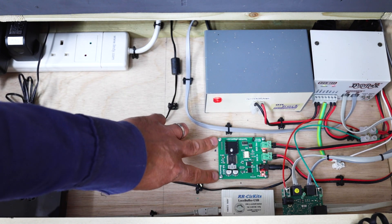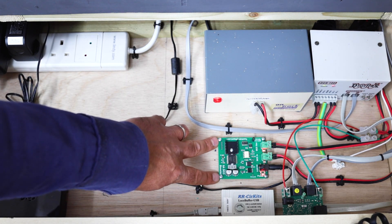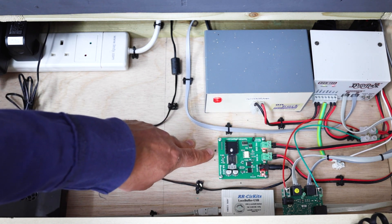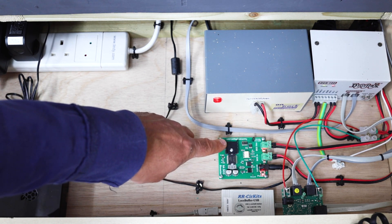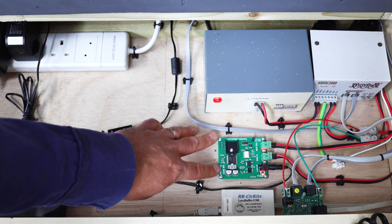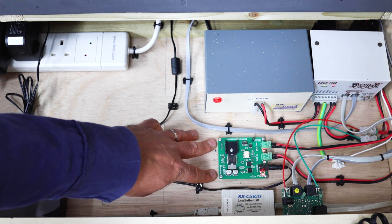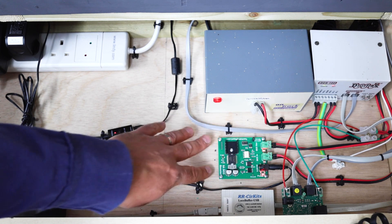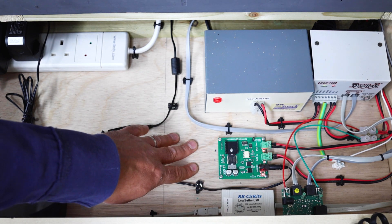Over here, I've got a Tam Valley Depot booster, 5 amp booster. Now this is for the accessory bus. So this powers all the signal controllers, the BDL168s which are block detectors, and also powers the point motors as well. I'm going to have one of these for each level of the layout, but this at the moment does everything, which is great.